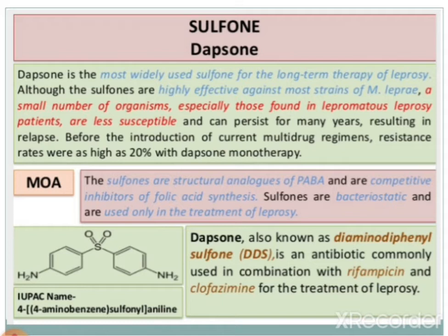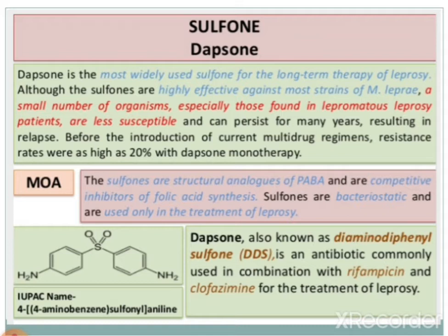The mode of action of sulfones is similar to sulfonamides, because sulfones are structural analogues of PABA — para-aminobenzoic acid — and are competitive inhibitors of folic acid synthesis. As with sulfonamides, they inhibit folic acid synthesis via the folic acid reductase enzyme. Sulfones are bacteriostatic and used only in the treatment of leprosy.